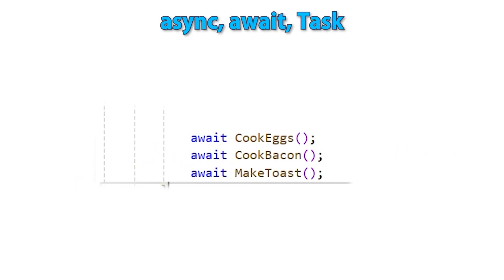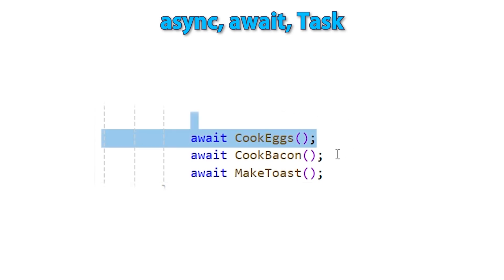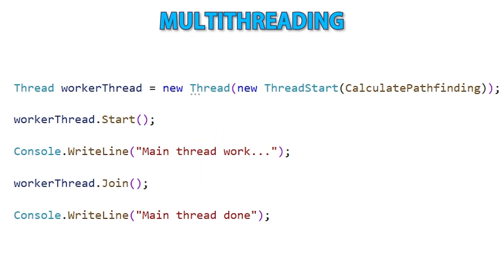Then we'll learn about asynchronous programming — specifically how to use async, await, and Task. This is how you can have code that takes time, like contacting a web server, and keep waiting for a response without blocking your program. This is extremely important for making sure your program feels responsive. After that comes a super important advanced lecture on multi-threading — how you can take advantage of all the cores in a CPU to make them all do work at the exact same time. Done properly you can get insane performance improvements, but it is very easy to make mistakes, so this is very much the definition of an advanced topic where you must know exactly what you're doing.